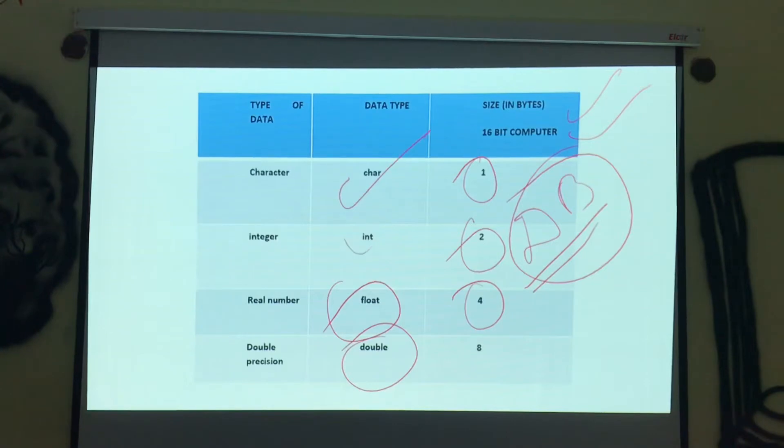Mainly we use char, int and float. Double we do not use in any programming. For characters, you write character. Integer you write integer. Float for decimals. For example, if I want to have 2.568, if I just give integer, it will come only two. If I want to include the decimal values, I will use float. That is the only difference.